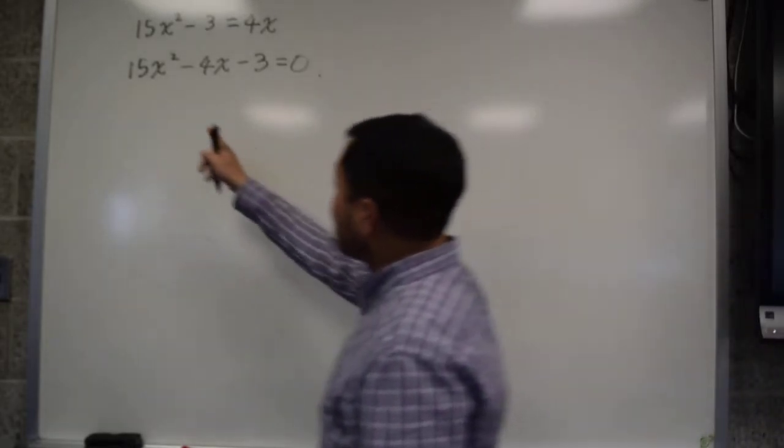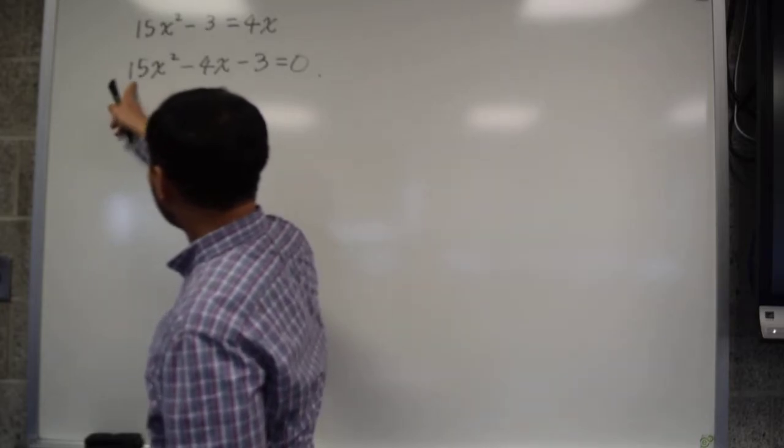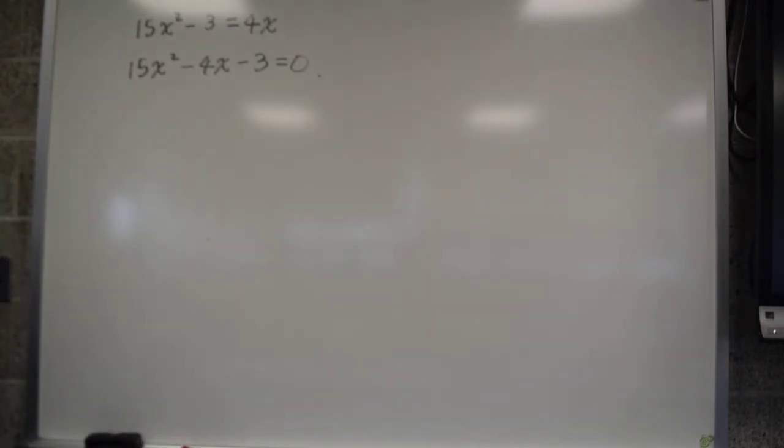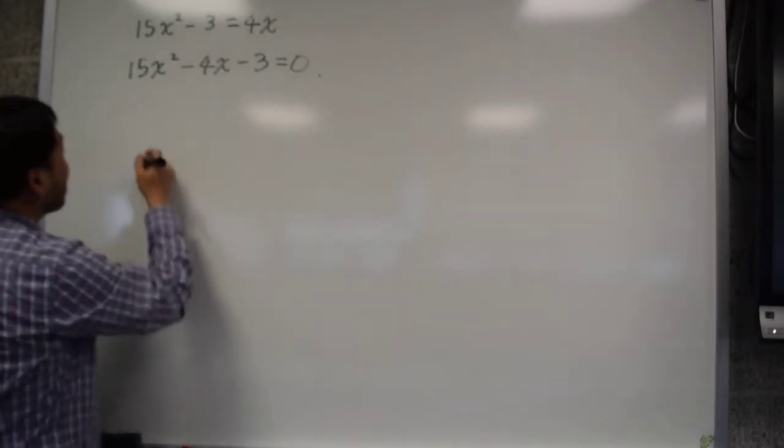Now, if this is not 1, if it's another number, then you have to do something called factoring by grouping. Of course, you can also do trial and error.